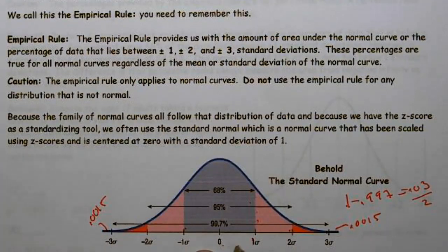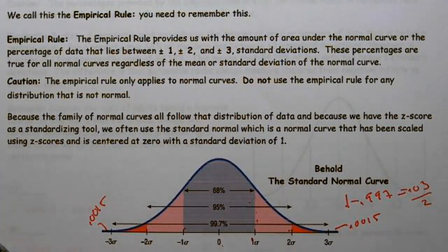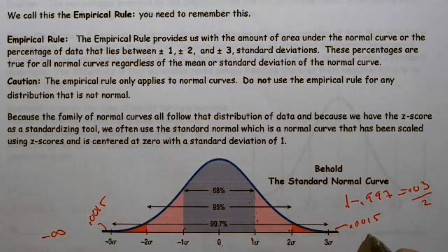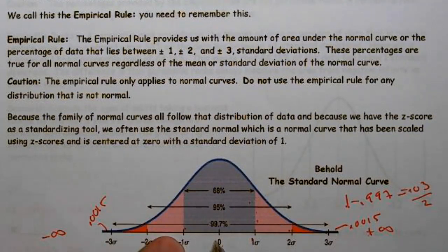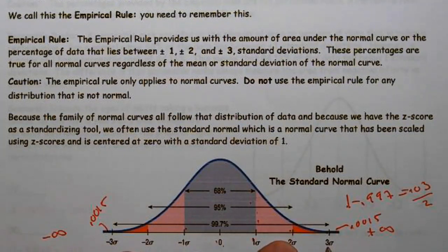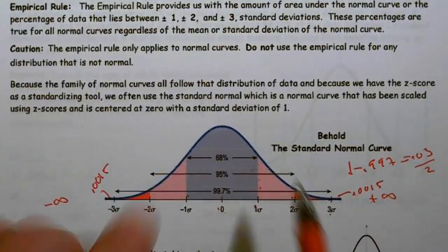The horizontal axis is essentially a number line running from negative infinity to positive infinity in standard deviations. The distances between points are exactly equal — just like a number line. So the distance between negative two and negative one is the same as the distance between positive two and positive three.